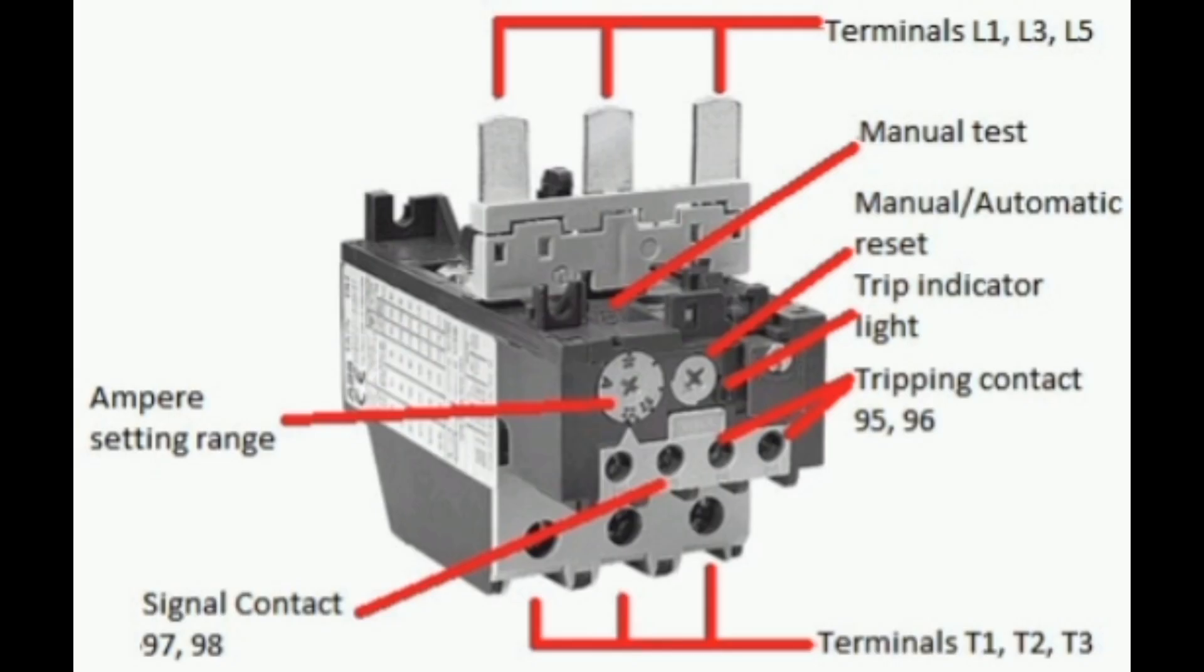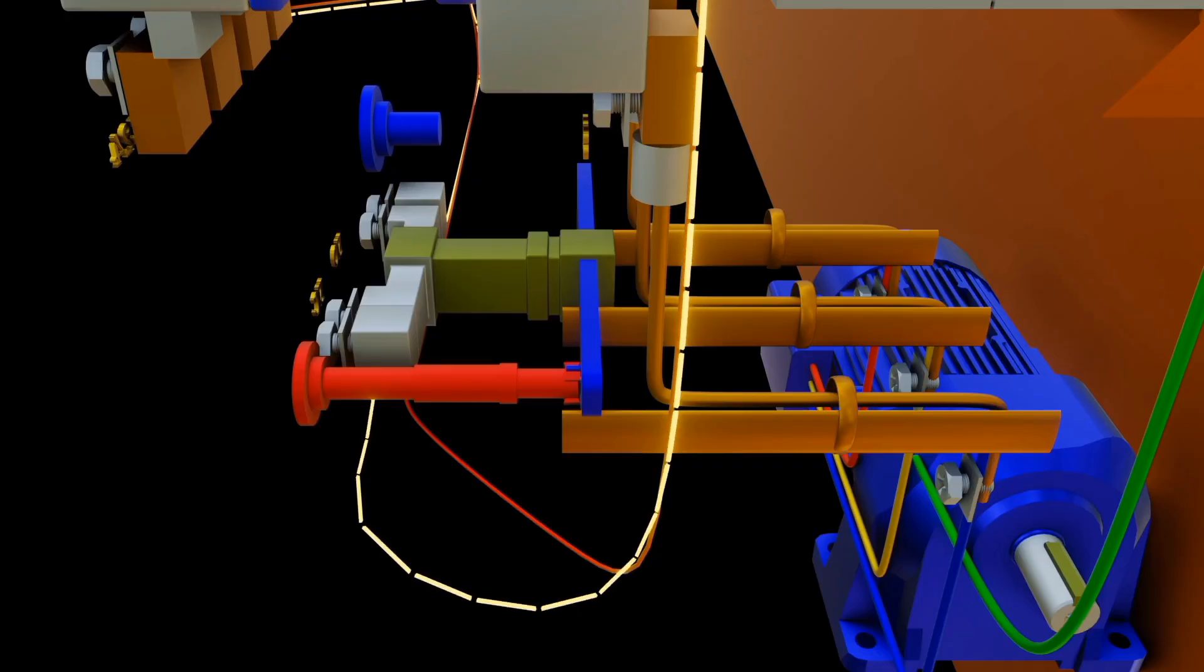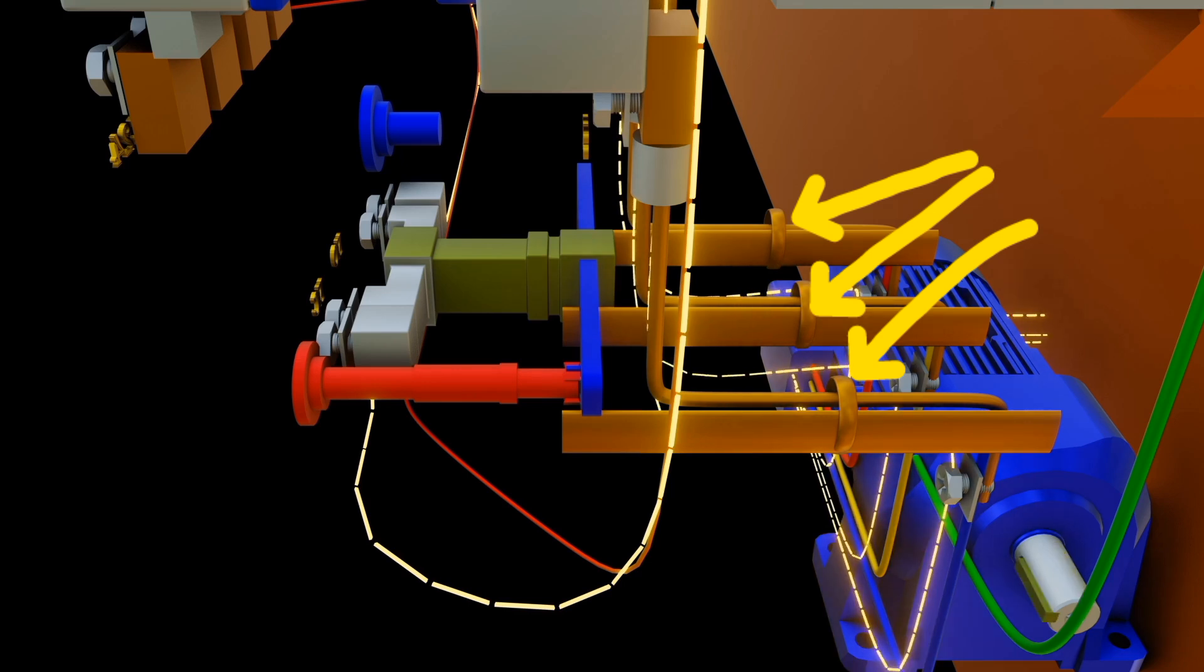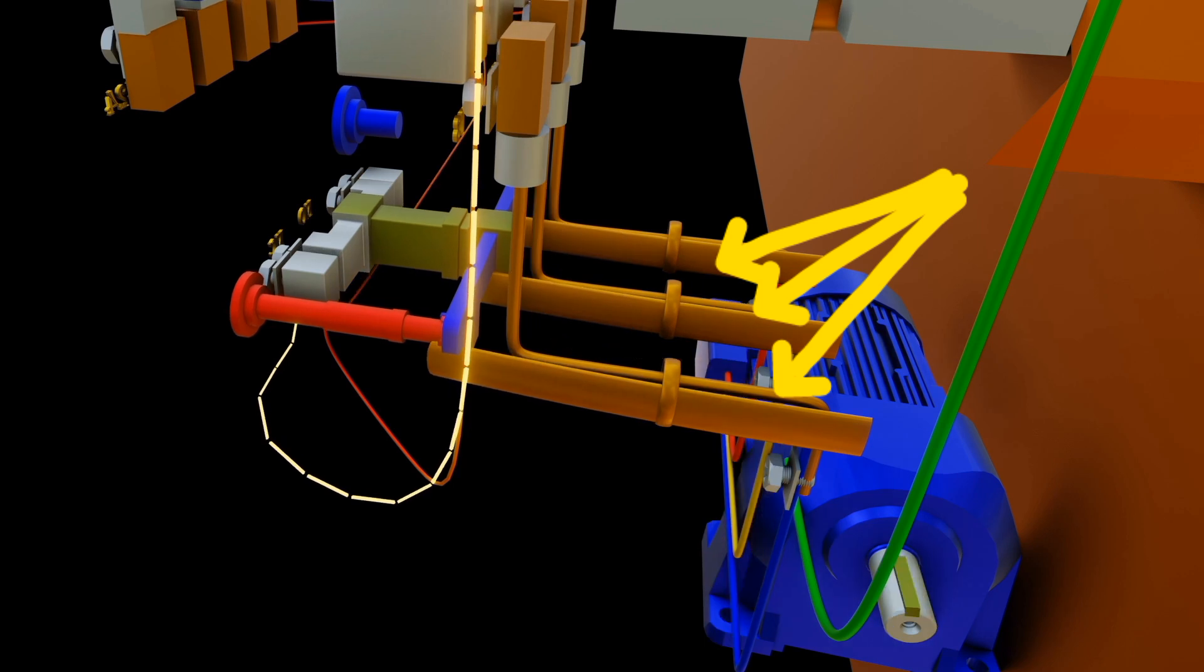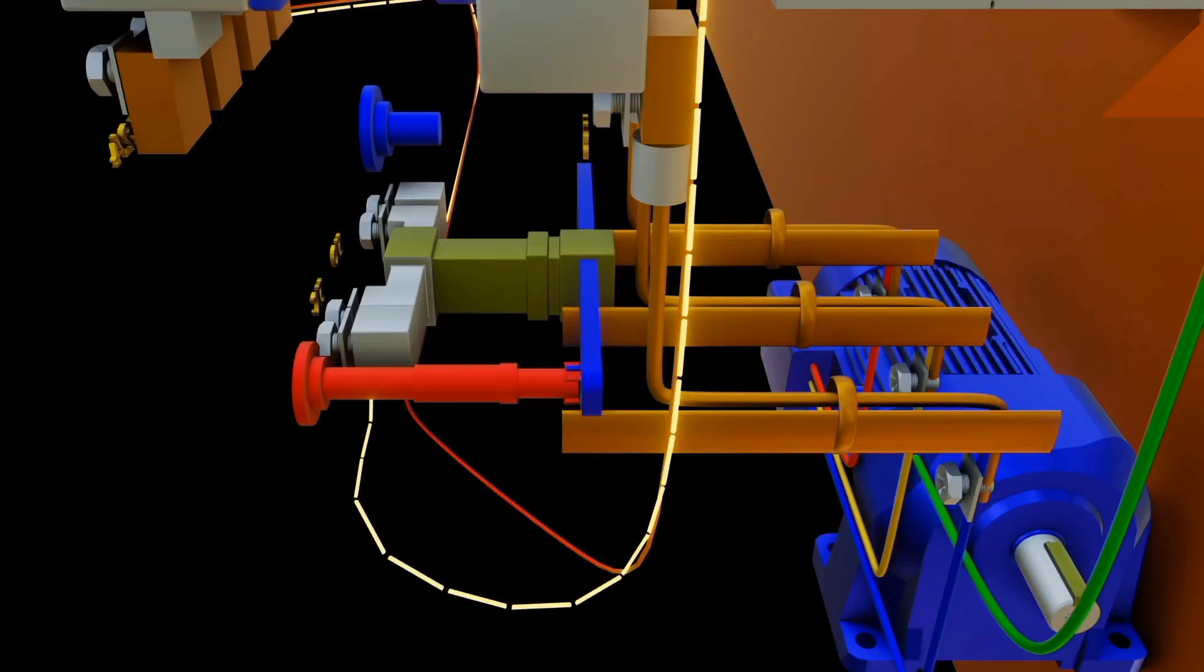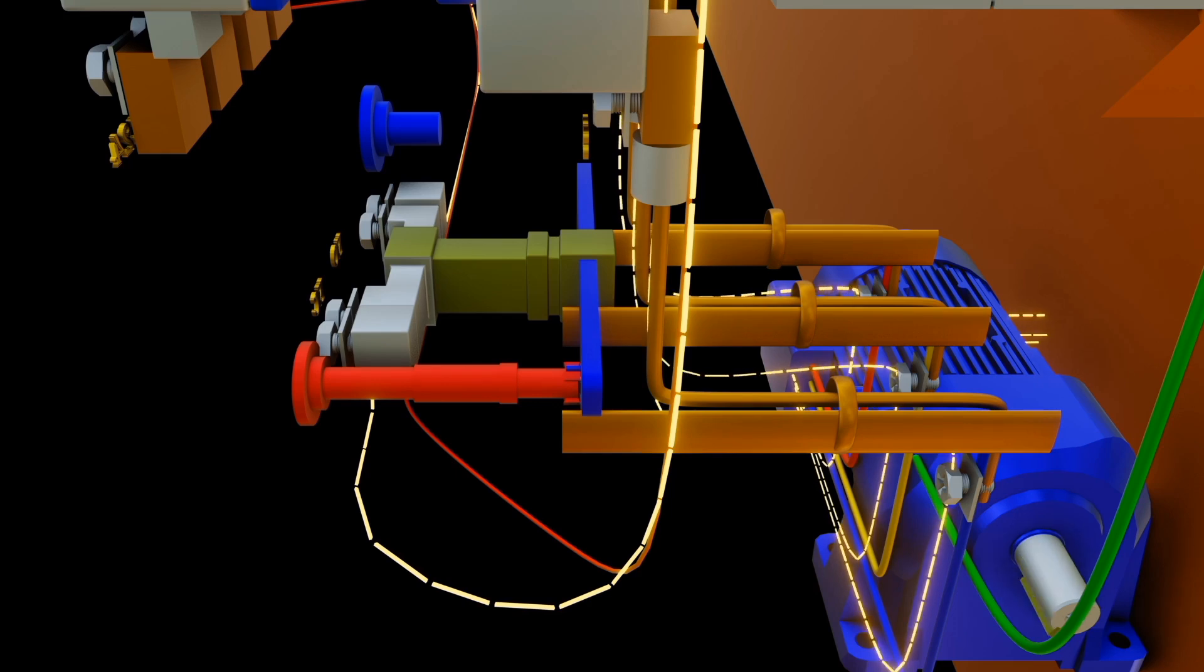Check out our video on contactor to know more about contactors. Some of the common and important features are ampere range setting. Inside thermal overload relay, it contains a copper coil which is attached to the terminal of overload relay and also it is attached to the bimetallic strip.